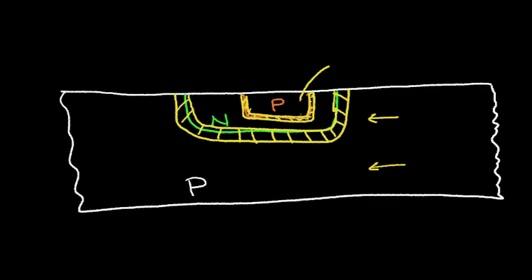So, for the same amount of area, I get more capacitance in the upper junction and less capacitance in the lower junction. Also, I can infer something about breakdown voltage: this wider depletion region will have a higher breakdown voltage, and this narrower depletion region will have a lower breakdown voltage.